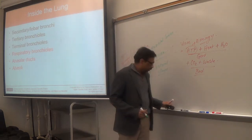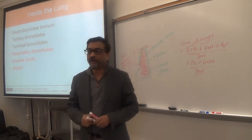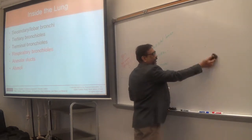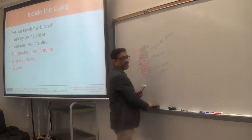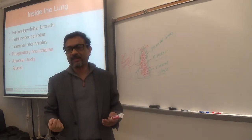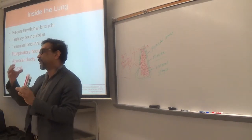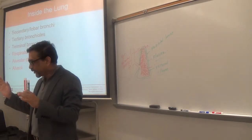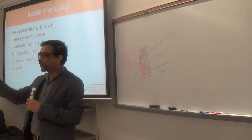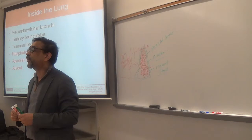The last three structures — respiratory bronchioles, alveolar ducts, and alveoli — are very important because gas exchange occurs through the wall of these three structures. All other structures from your nose to the terminal bronchiole are only for the passage of gas.